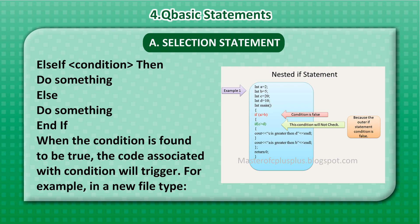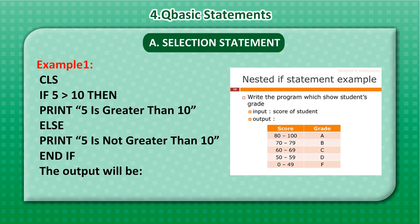in a new file, Example 1: CLS. If 5 is more than 10, then print '5 is greater than 10', else print '5 is not greater than 10'. End if.